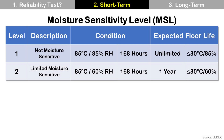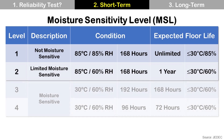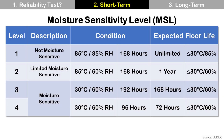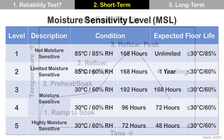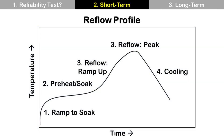Level 2 is Limited Moisture Sensitive. Its test condition is 85°C with 60% relative humidity for 168 hours. If passed, its floor life is 1 year when exposed at lower than 30°C with 60% relative humidity. Levels 3 and 4 are Moisture Sensitive, with test conditions of 30°C with 60% relative humidity for 192 hours and 96 hours respectively. Level 6 is Highly Moisture Sensitive, with a test condition of 30°C with 60% relative humidity for 72 hours.